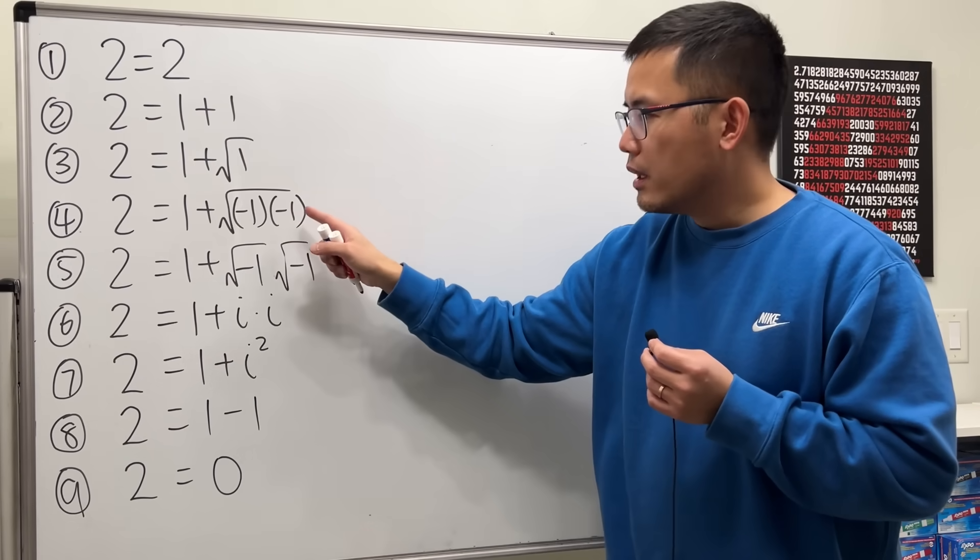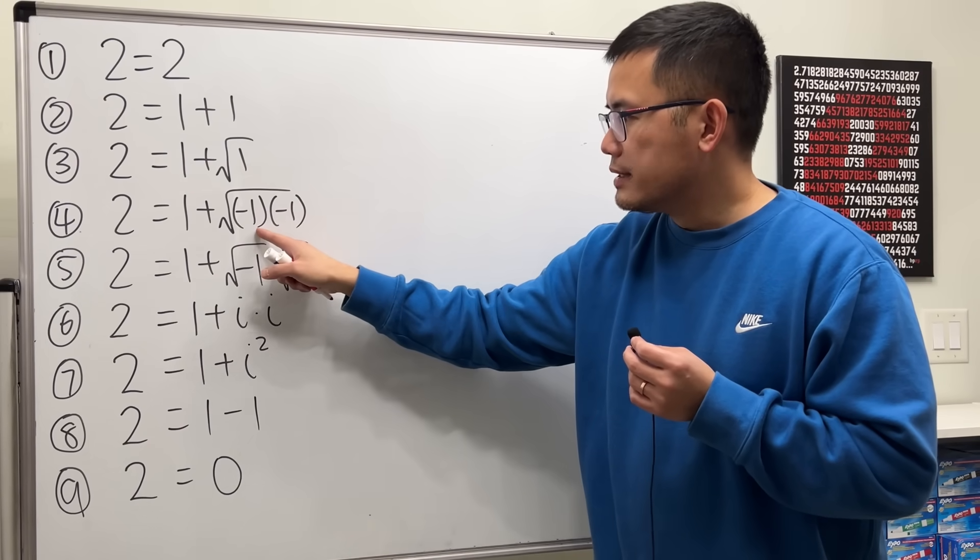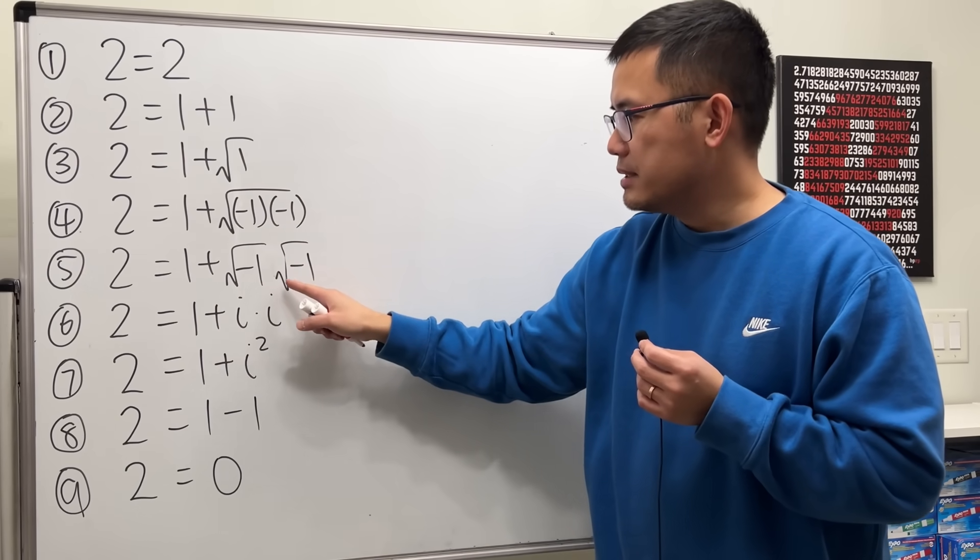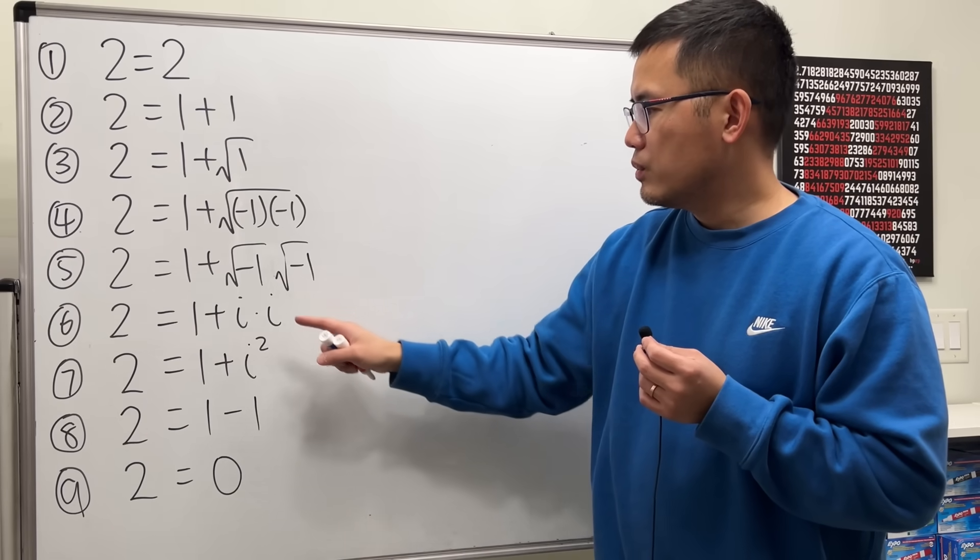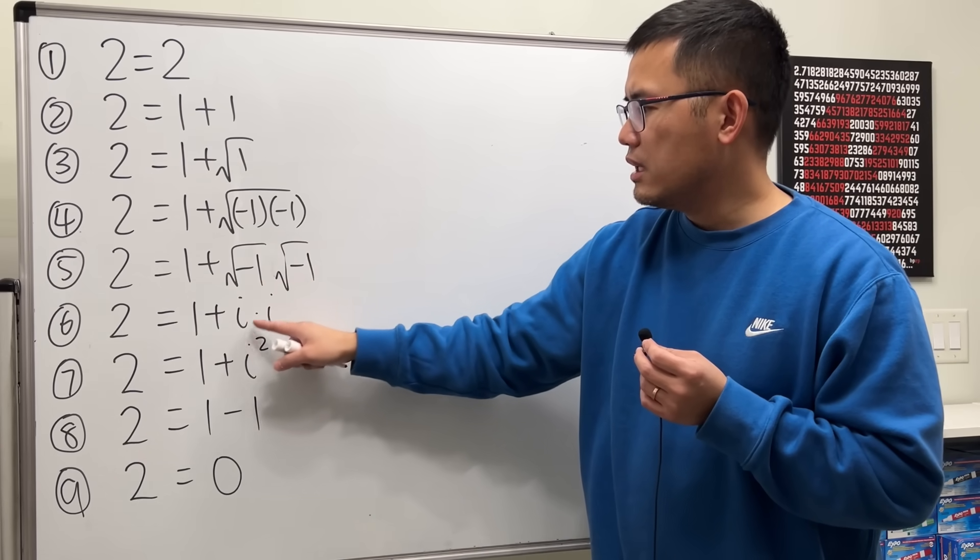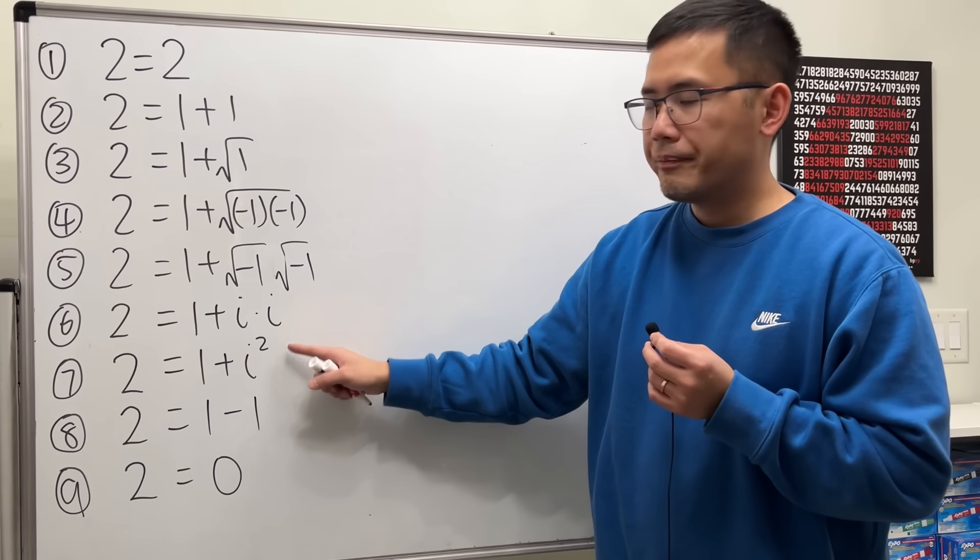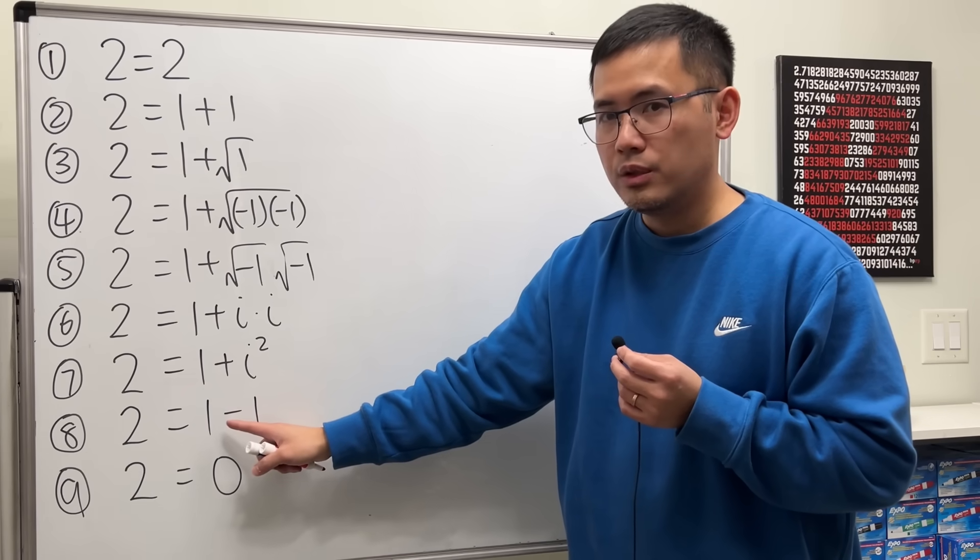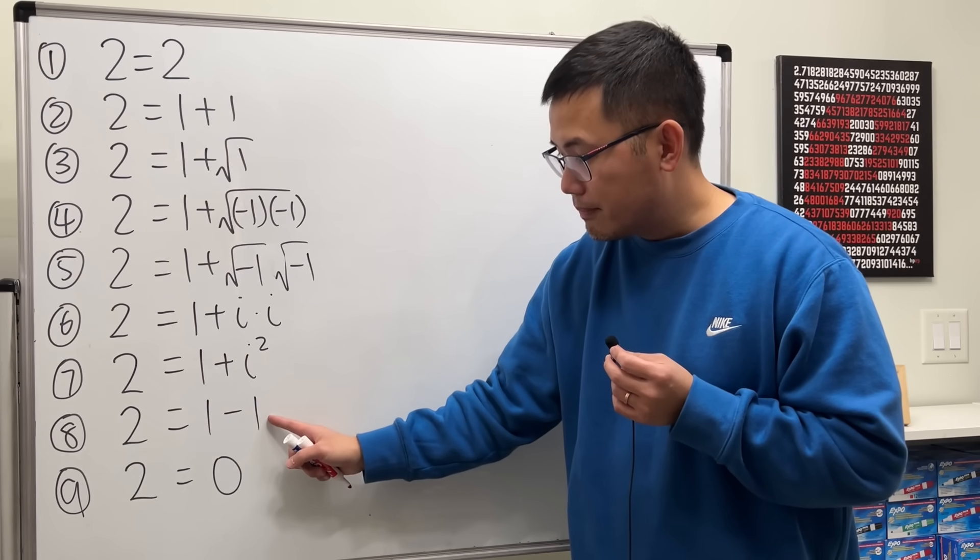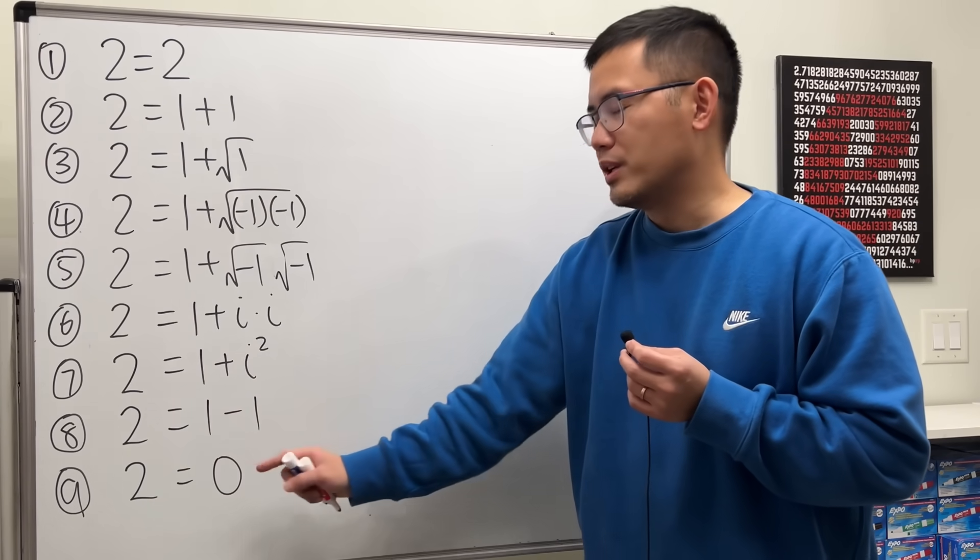And then from here to here we have square root of negative 1 times another square root of negative 1, okay. And then square root of negative 1 is i, likewise this square root of negative 1 is also i. i times i is i squared, and then i squared by definition we get negative 1, and finally 1 minus 1 we get zero.